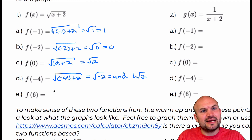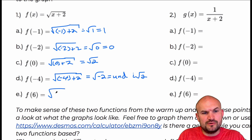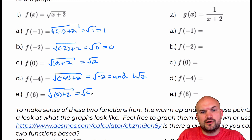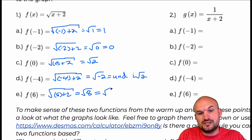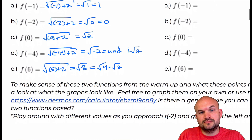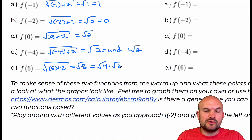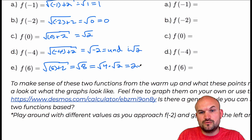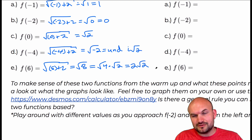You could simplify the square root of negative two to i times the square root of two, but i is an imaginary number, so for now it's undefined. For f of six, I take the square root of six plus two, which is the square root of eight. That breaks apart as the square root of four times the square root of two, giving two radical two — just a little review on simplifying radicals.